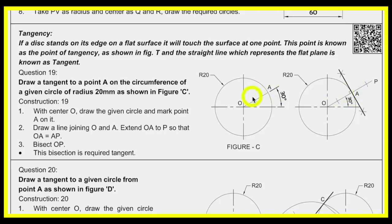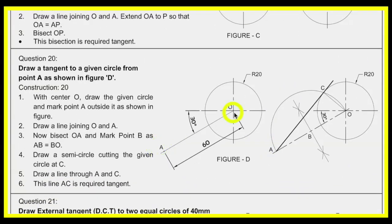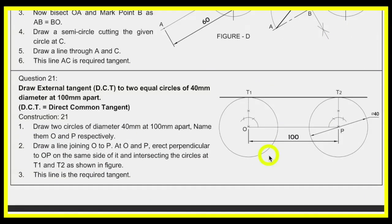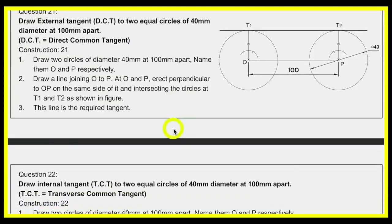For drawing a tangent when the point is outside: take O to A and cut the same distance outside to get P, then bisect OP. Bisect OA and draw the mid-circle — wherever it touches is point C. Join A to C to get the tangent. For DCT (direct common tangent / external tangent) with equal radii, draw perpendicular and a straight line.